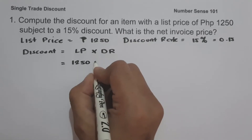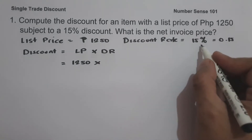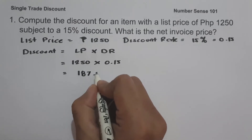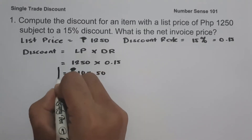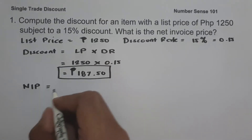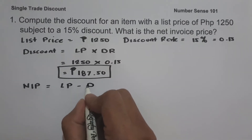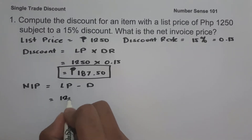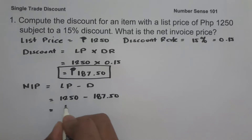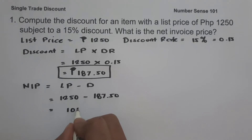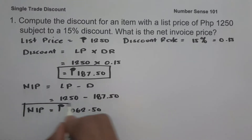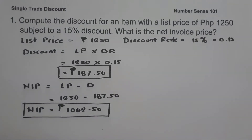So we have one thousand two hundred fifty times the discount rate, which is fifteen percent or zero point fifteen. If you multiply this, we get one hundred eighty-seven point fifty pesos — this is the discount. Then the net invoice price, or NIP, equals list price minus the discount: one thousand two hundred fifty pesos minus one hundred eighty-seven point fifty pesos, which gives us one thousand sixty-two point fifty pesos. This is our net invoice price.